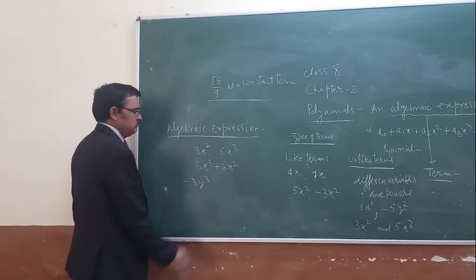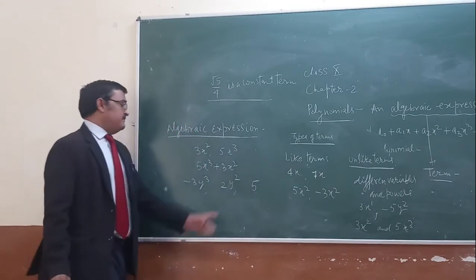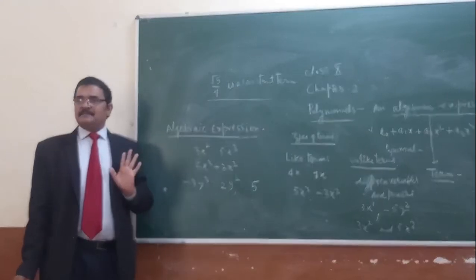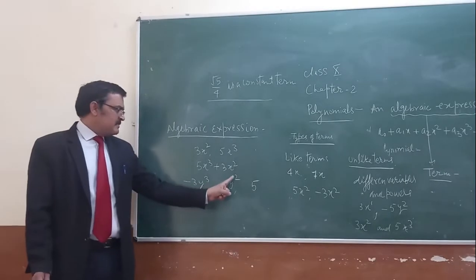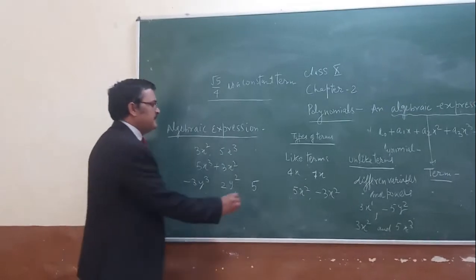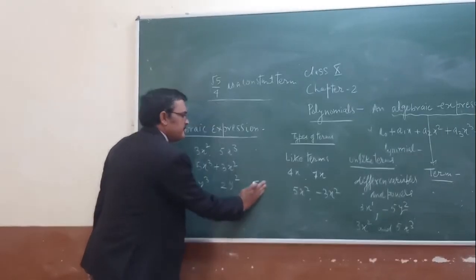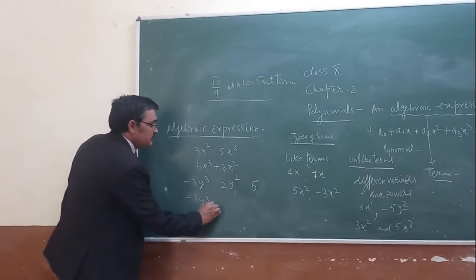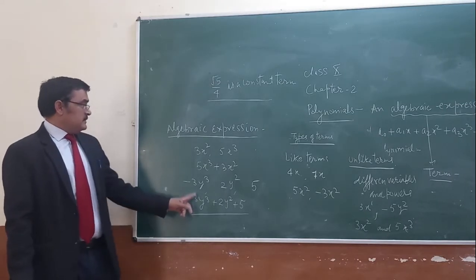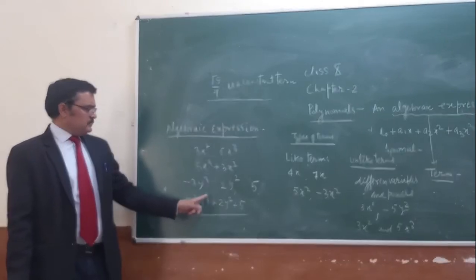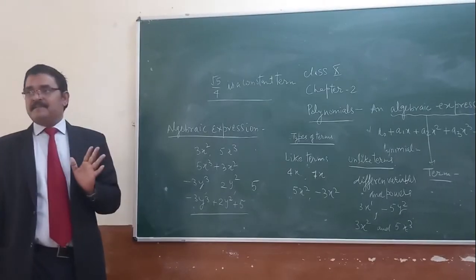If I write minus 3y³ plus 2y² plus 5 — these are three terms and all three are unlike terms. Here power is 3, here power is 2, and here power is 0 (since 5 can be written as 5·y⁰ = 5, which is a constant term). These unlike terms minus 3y³, plus 2y², and 5 are separated by minus and plus, so it is an algebraic expression.